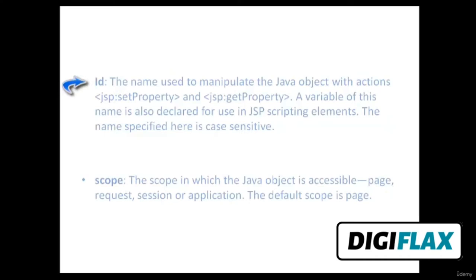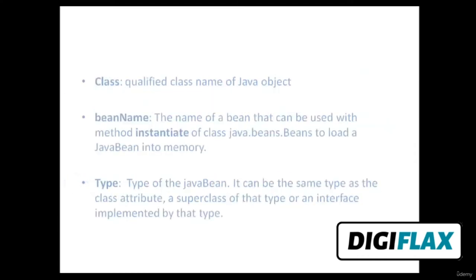The scope attribute defines the scope in which the Java object is accessible — it can be page, request, session, or application, with page as the default. The class attribute is the fully qualified class name of the Java object. The beanName attribute is the name of the bean that can be used with the Beans.instantiate() method of class java.beans.Beans to load a Java bean into memory. The type attribute is the type of the Java bean — it can be the same type as the class attribute, a superclass of that type, or an interface implemented by that type.